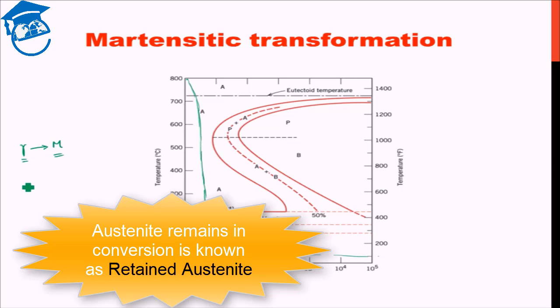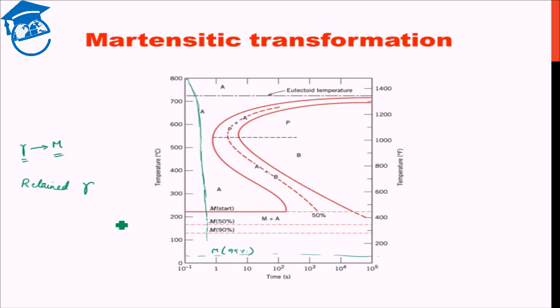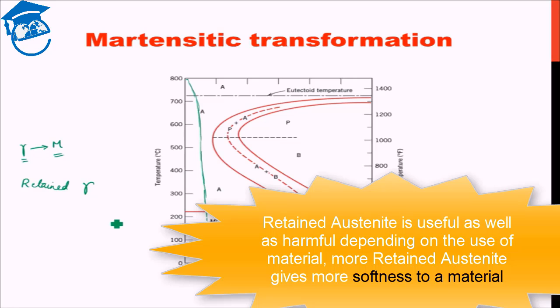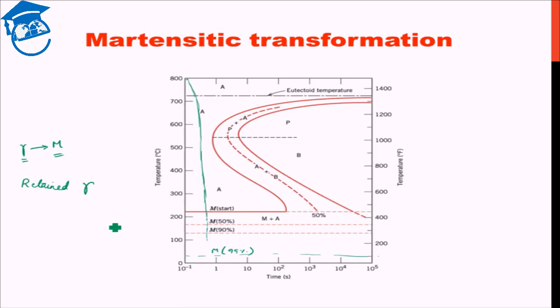That austenite is termed as retained austenite. This retained austenite can be useful or harmful depending on the application it is put to. Retained austenite is itself a much softer phase than martensite. So if our main criteria is to have a material which has very high wear resistance or very high hardness, then having retained austenite in high percentage can be very detrimental to the property. But if you need some flexibility, some ductility in the material, then maybe it's not a bad idea to have some retained austenite.